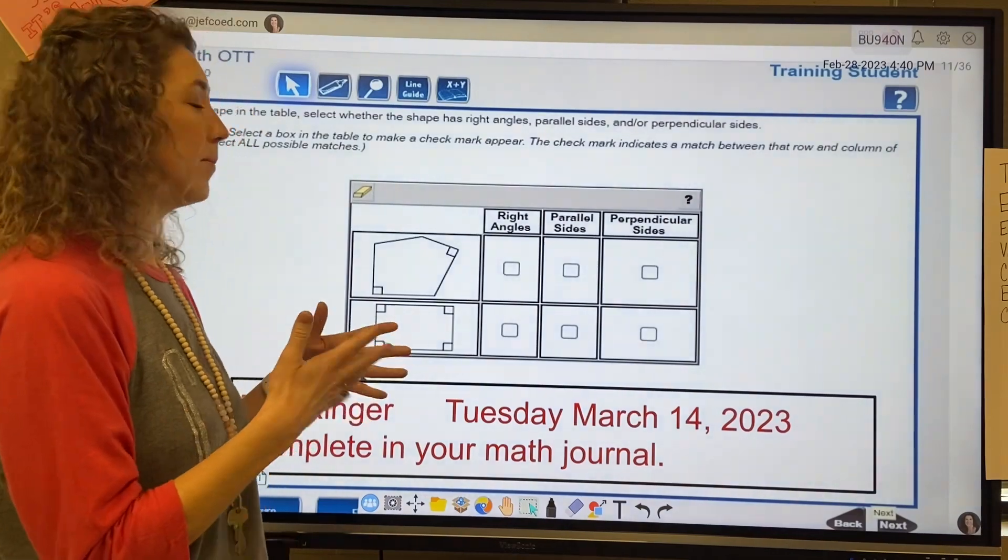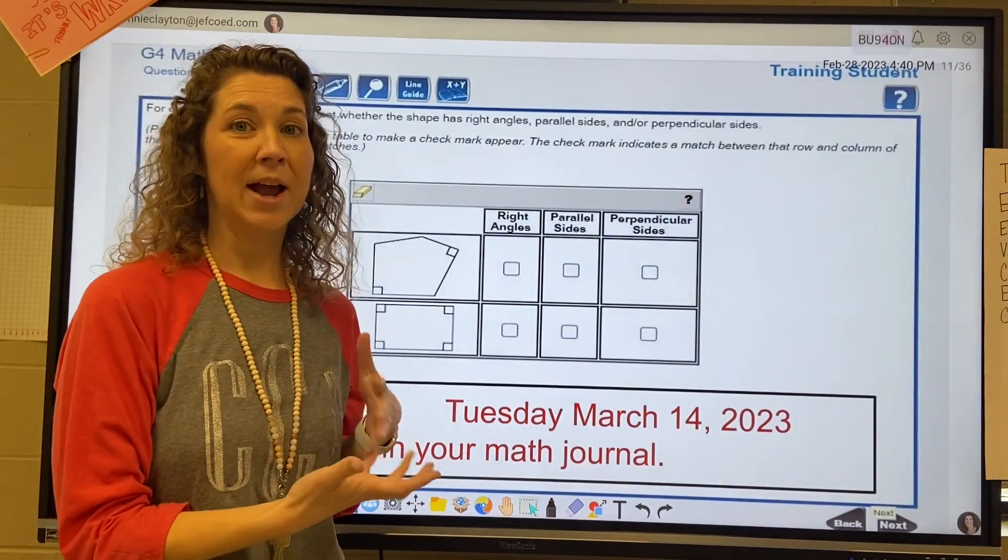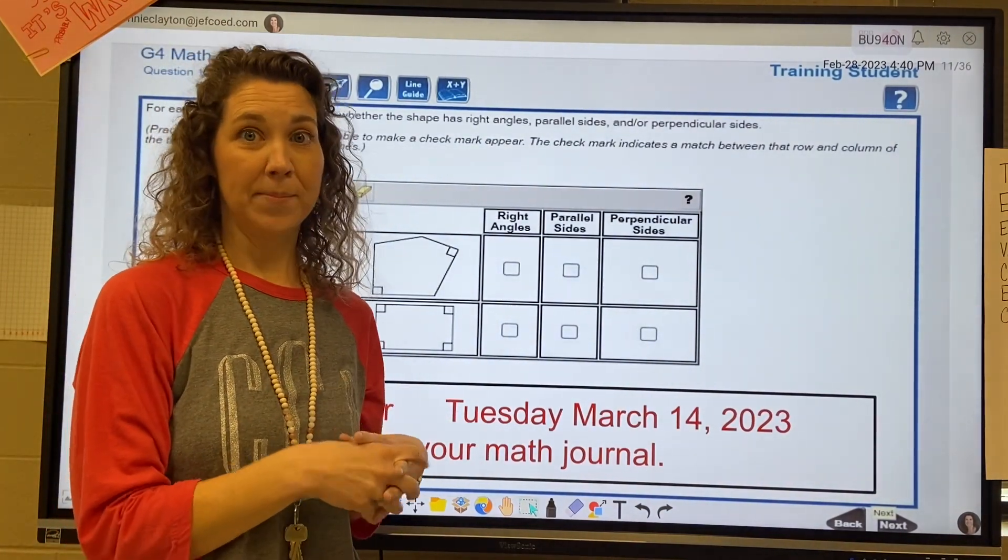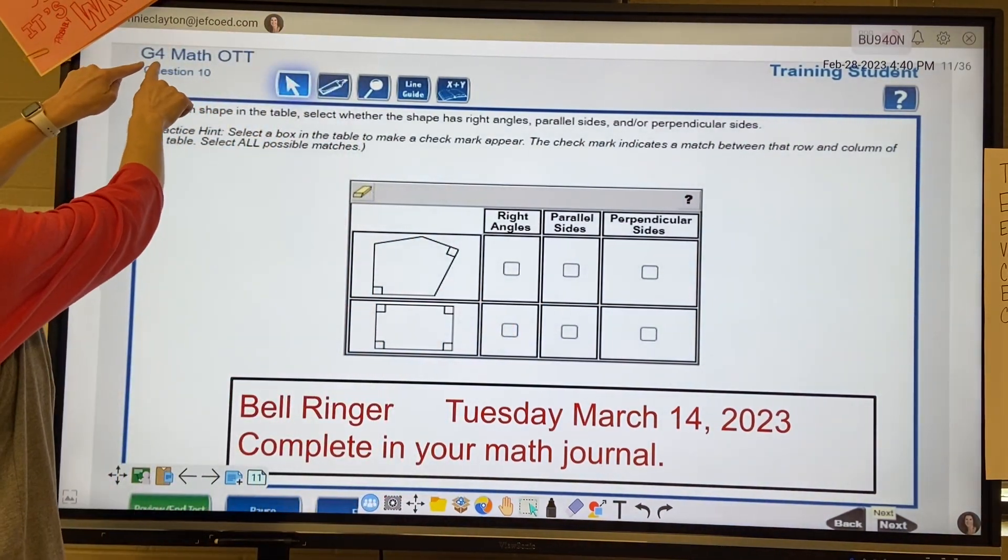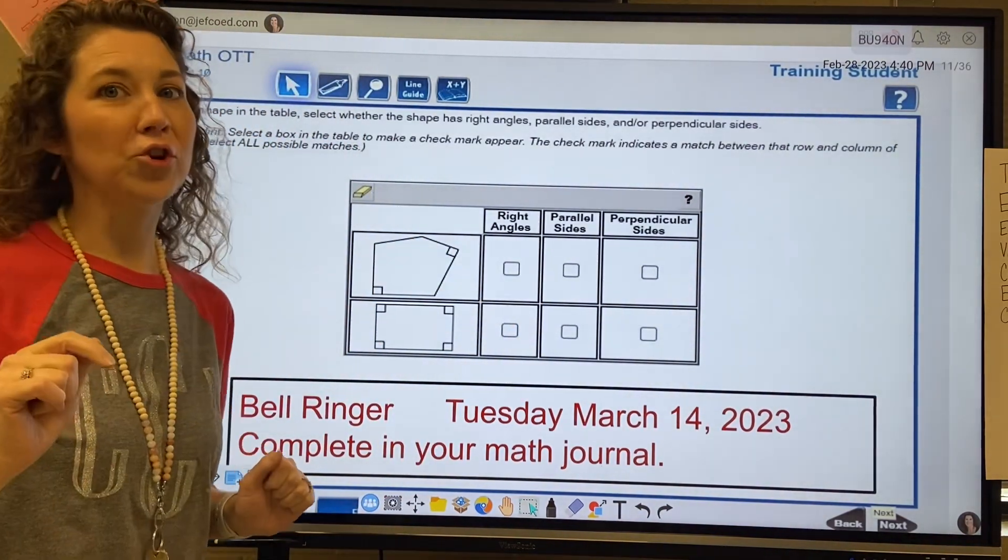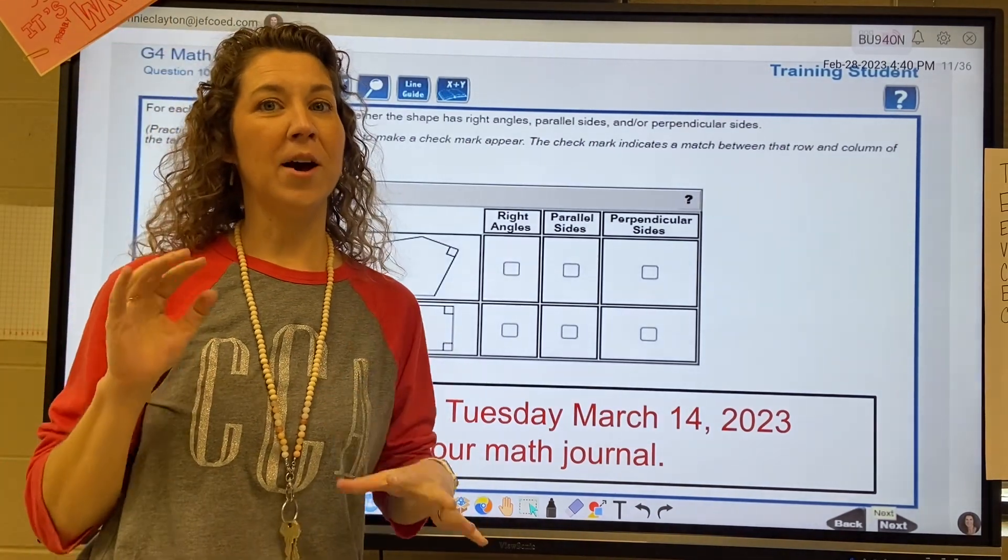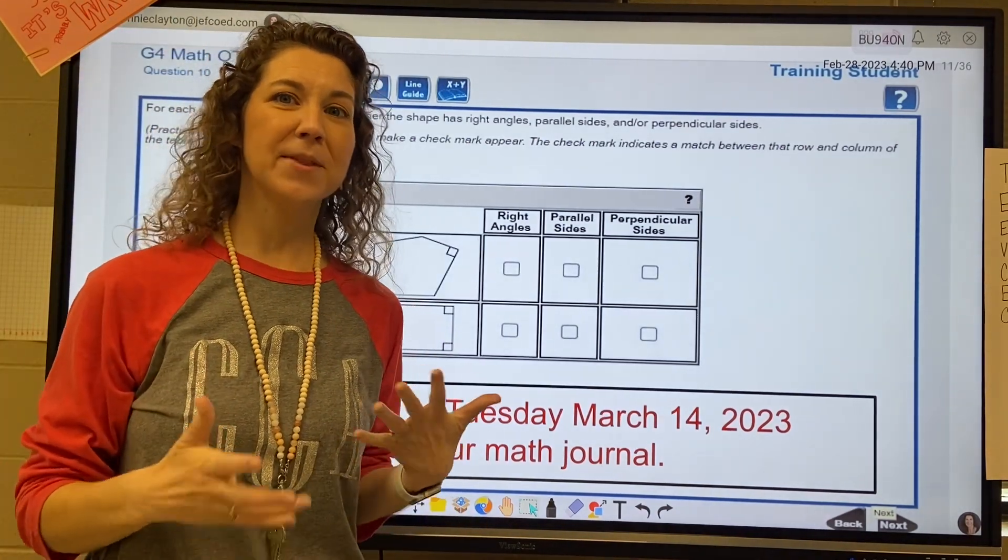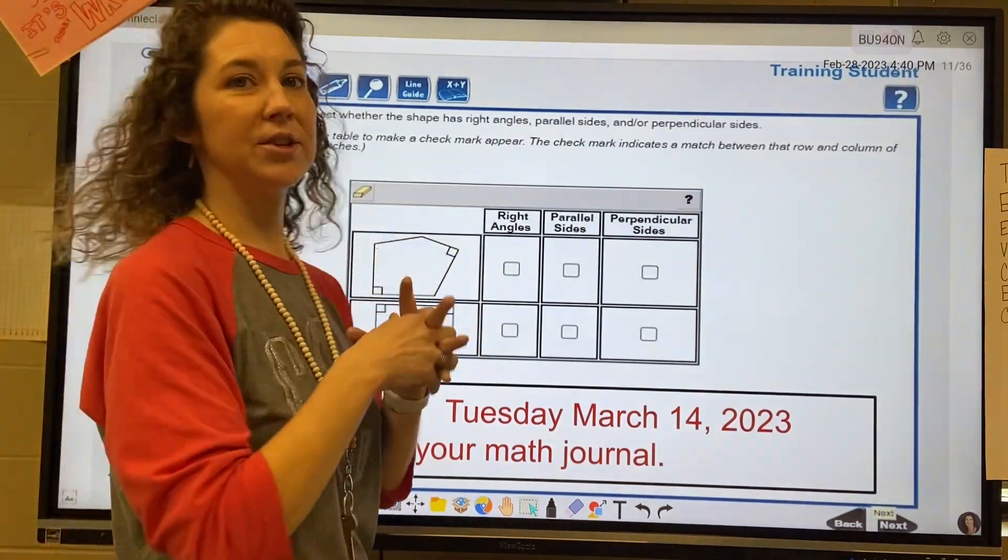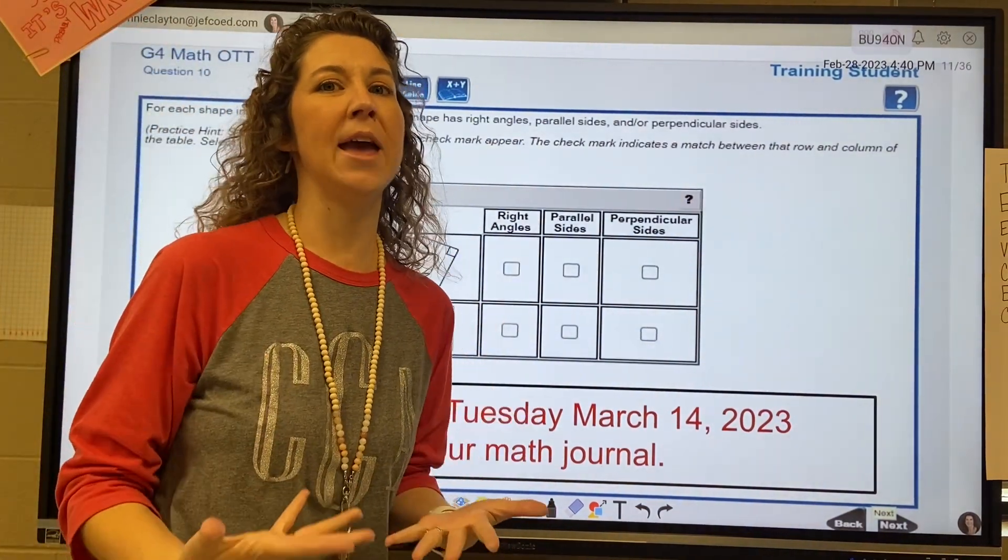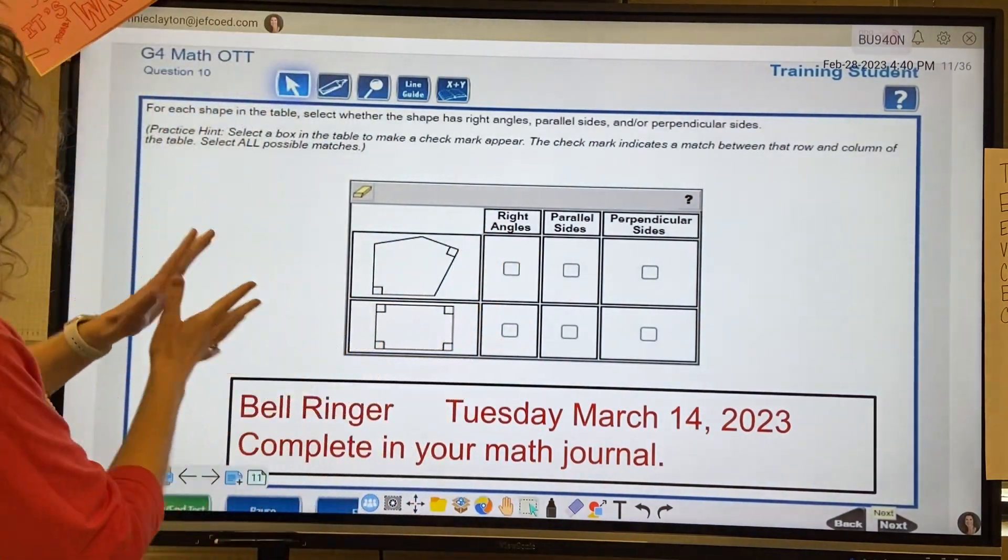Okay, so this bell ringer is a practice for the ACAP. If you noticed right up here in the corner it says G4, and that means it's a fourth grade question. So we're just going to practice with some of the things with ACAP. I know it's kind of small written up here, but just try to get you used to what the ACAP questions look like.